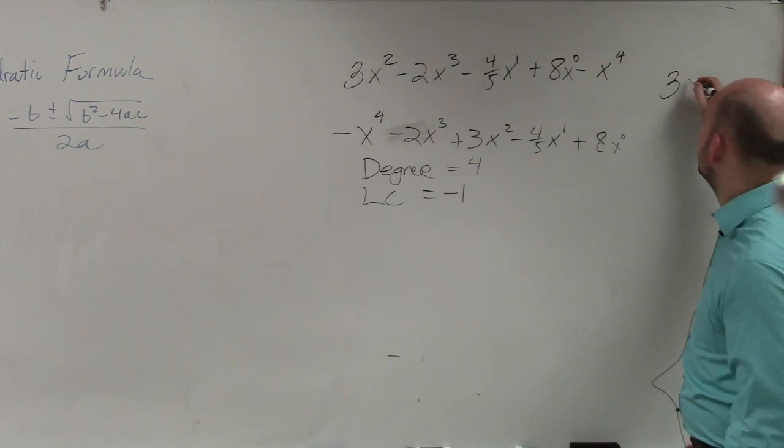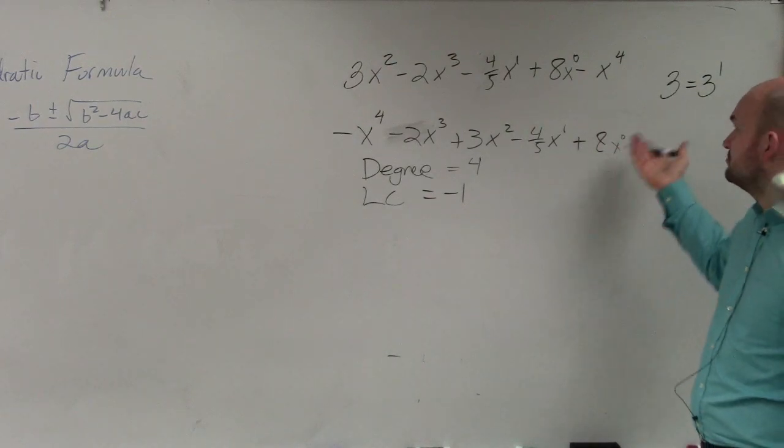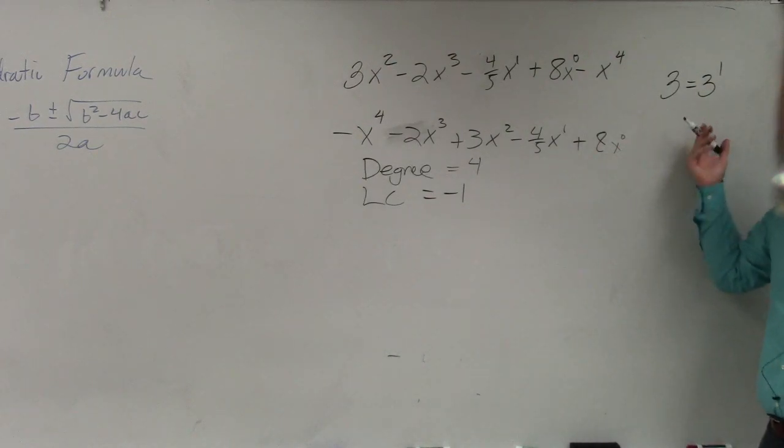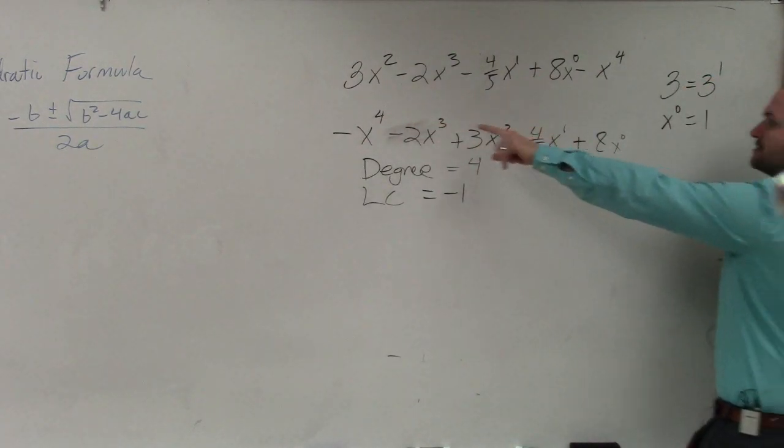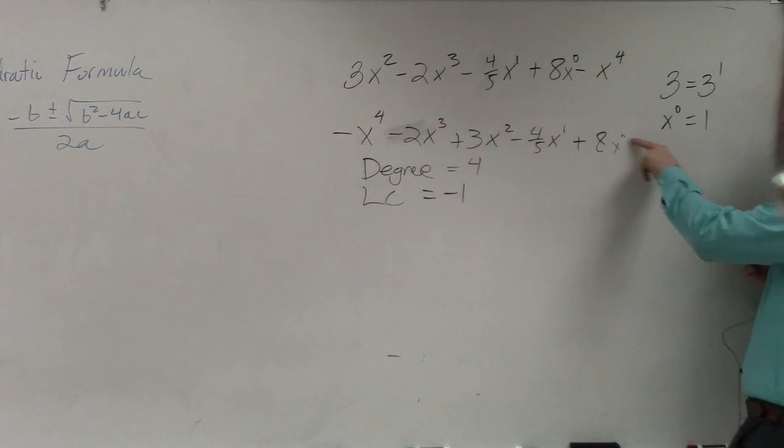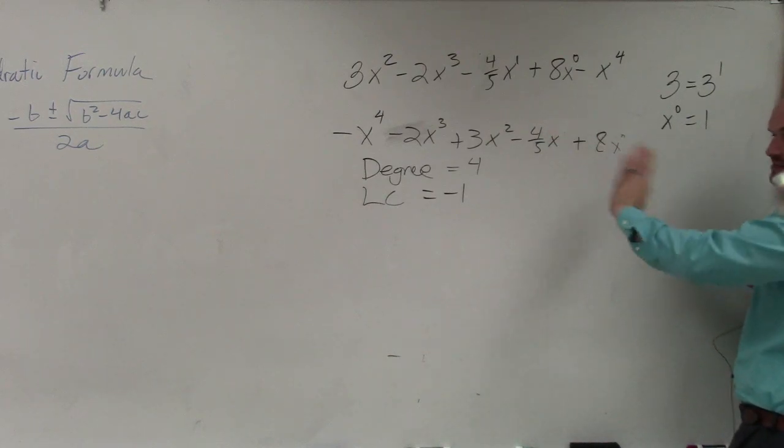Basically all I'm saying is 3 is equal to 3 to the first power. Right? Same thing, right? There's no difference. I just wrote, same thing, x to the 0 is equal to 1. Right? Same thing. So all I'm saying is I just wrote it as x to the 0 just so you could see that the exponent, go down, or the powers go in descending order. But we don't really write that 1 up there ever. Right? So I just leave it off there.